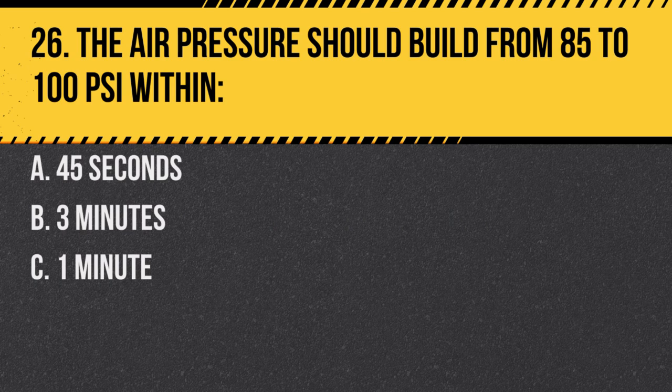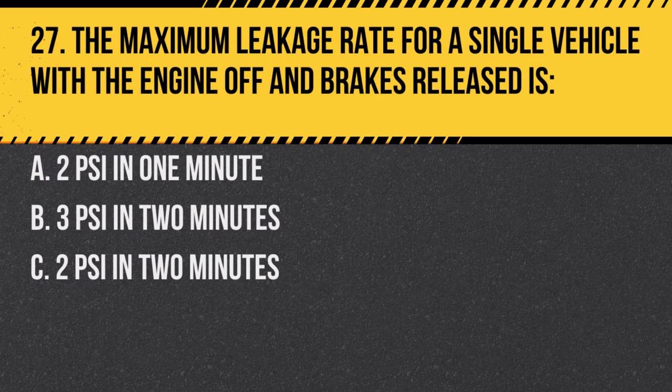Question 26. The air pressure should build from 85 to 100 psi within: A. 45 seconds. B. 3 minutes. C. 1 minute. Answer A. 45 seconds. This ensures the compressor is working efficiently.